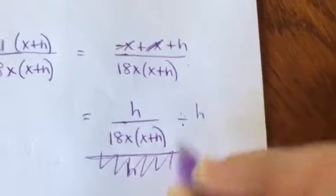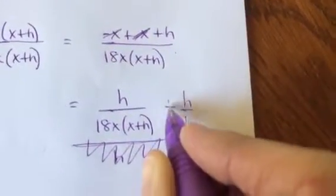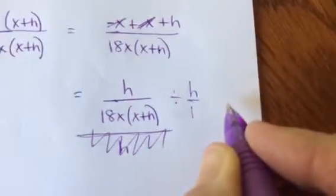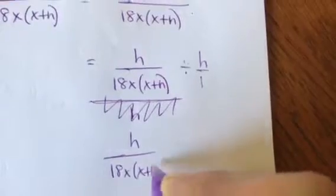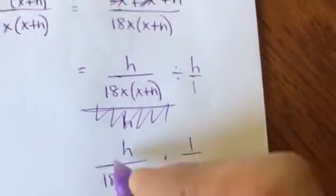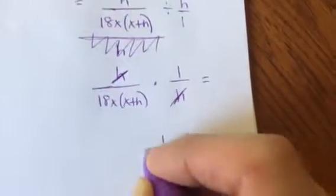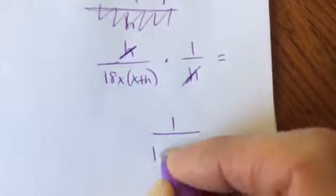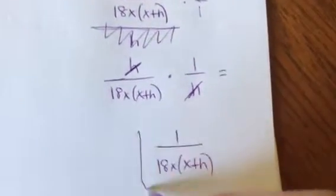So I'm going to come down here. Here's my 18x times x plus h. I'm going to multiply by the reciprocal. So these h's would cancel. So my final answer is 1 over, and this is exactly how you'll enter it on MyMathLab. That is your answer. So weird, I know.